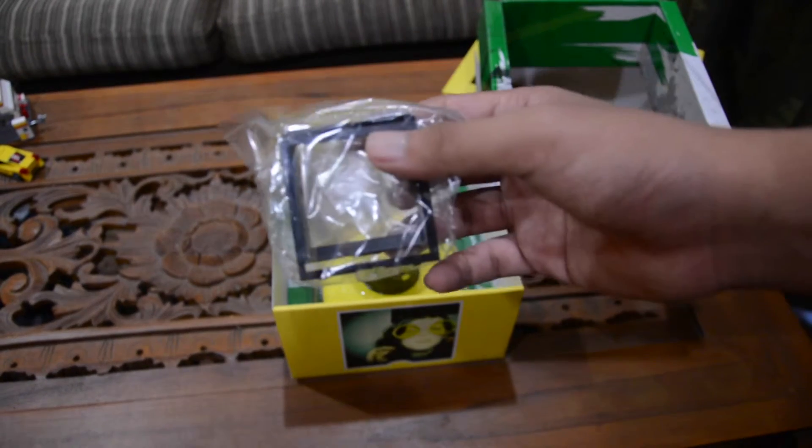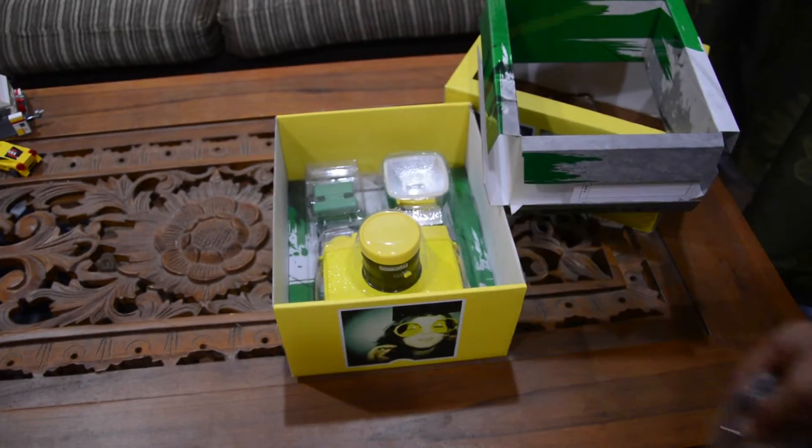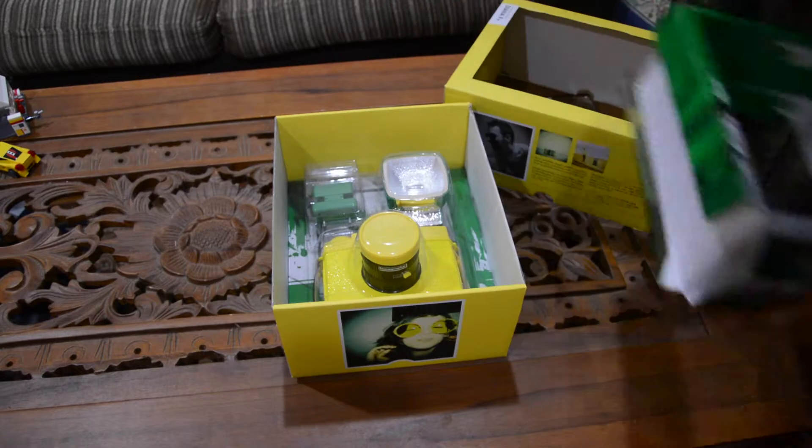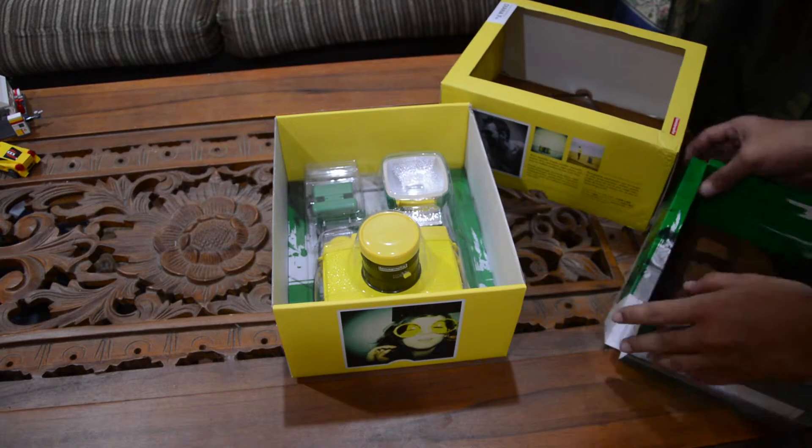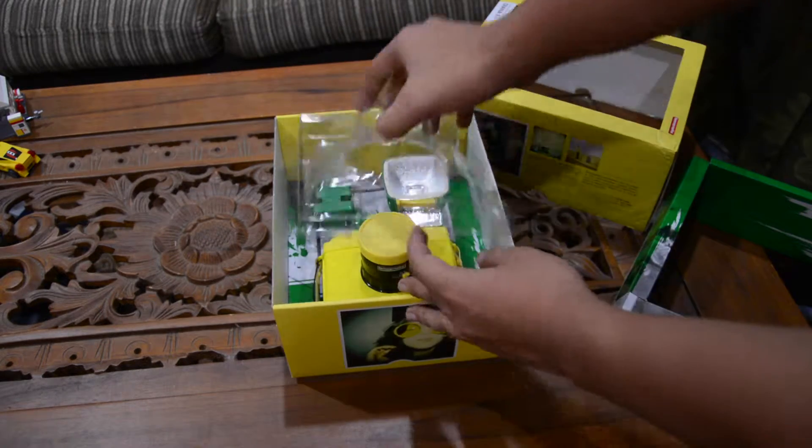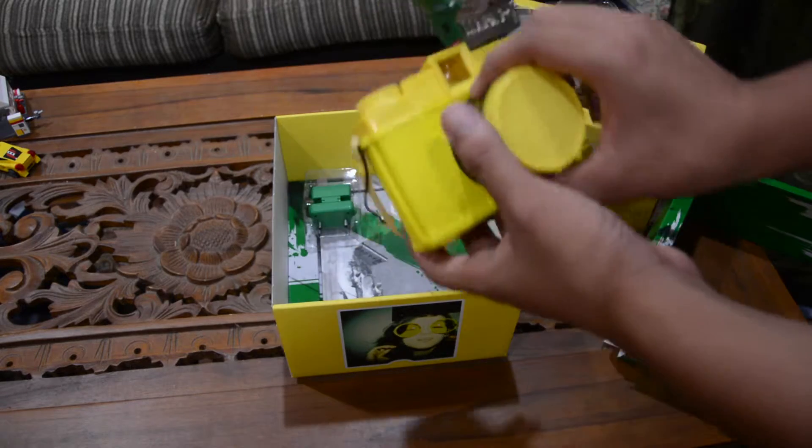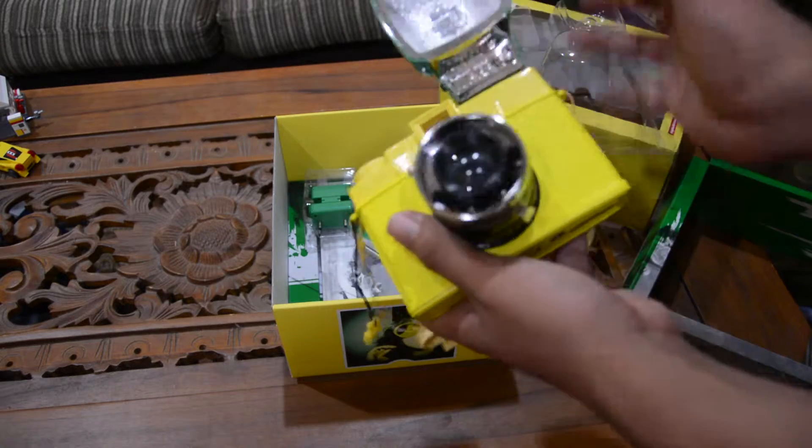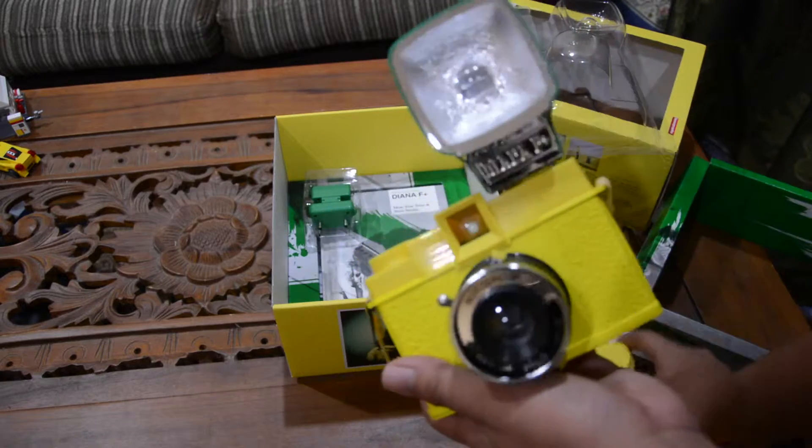Okay, here's the mask. The thing that makes you choose the image size. Yeah, this is the camera itself. The Diana F Plus with the flash.